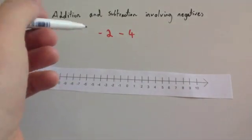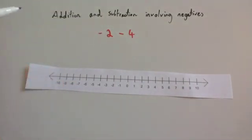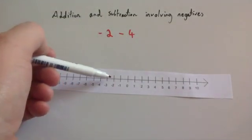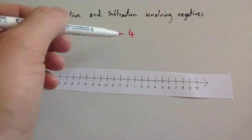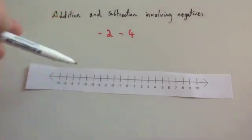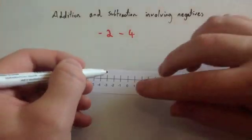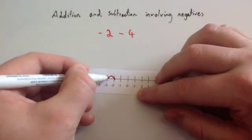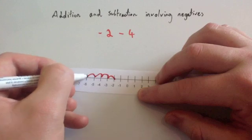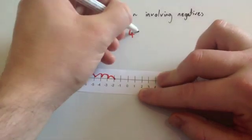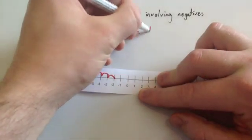The next question: minus 2 subtract 4. You're going to start at minus 2, and you're going to subtract 4, which means you're going to go 4 to the left: 1, 2, 3, 4. So your answer would be minus 6.